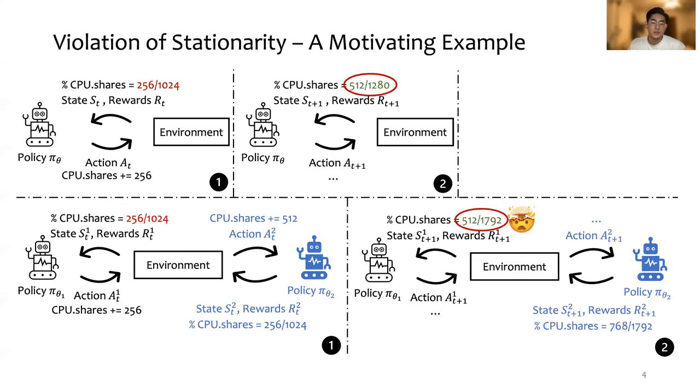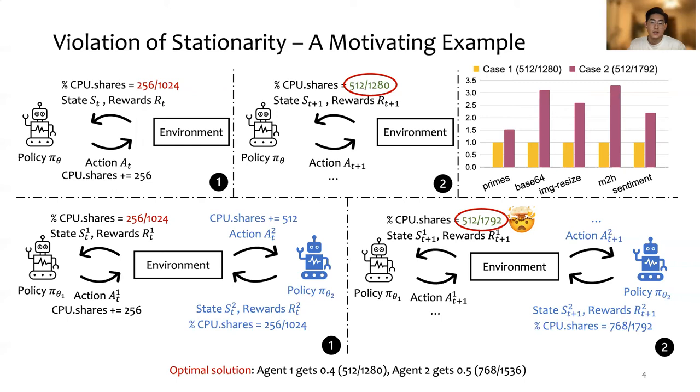Now, the resulting state for each agent is no longer the preferred state. The optimal solution is to have 512 for agent 1 and 512 for agent 2, which we can find in the single-tenant cases respectively. Compared to the optimal solution, environment non-stationarity results in up to 3.3 times performance degradation across different serverless workloads.